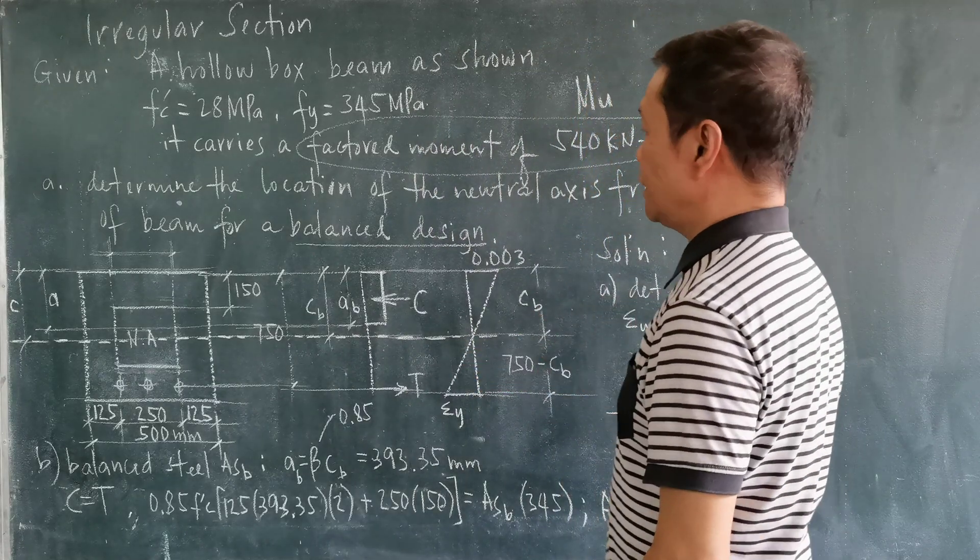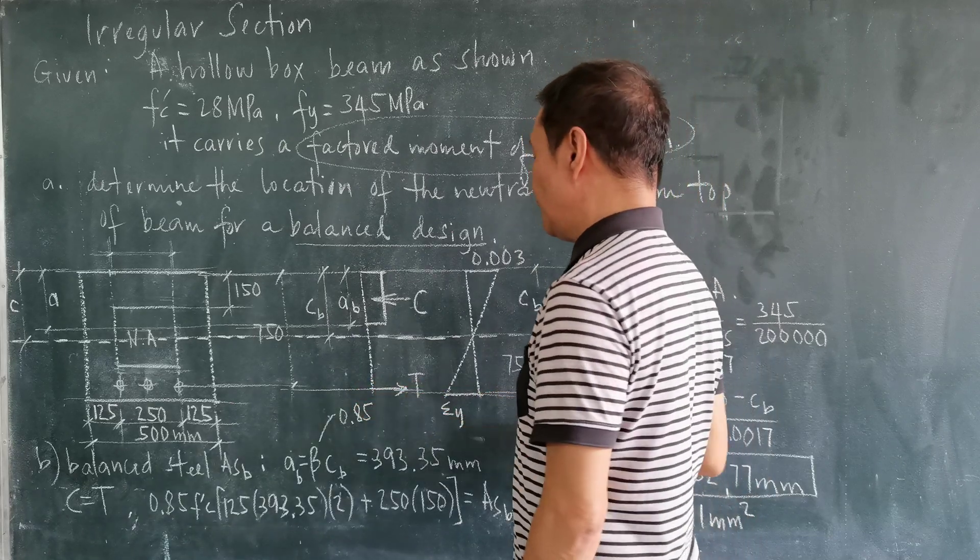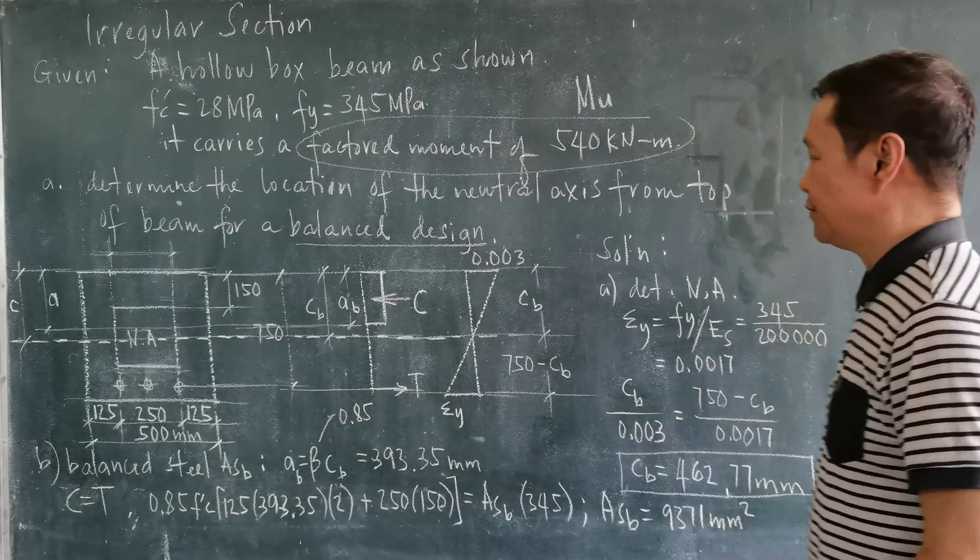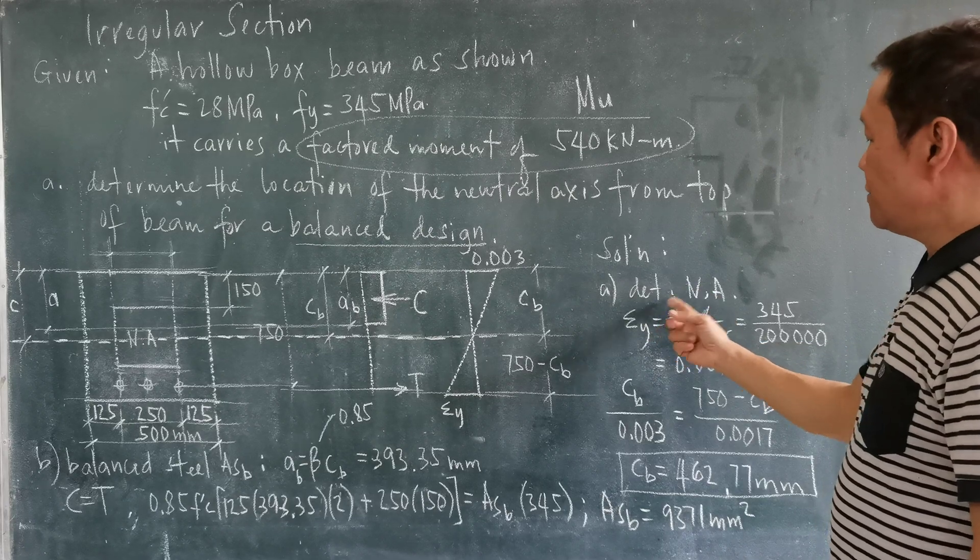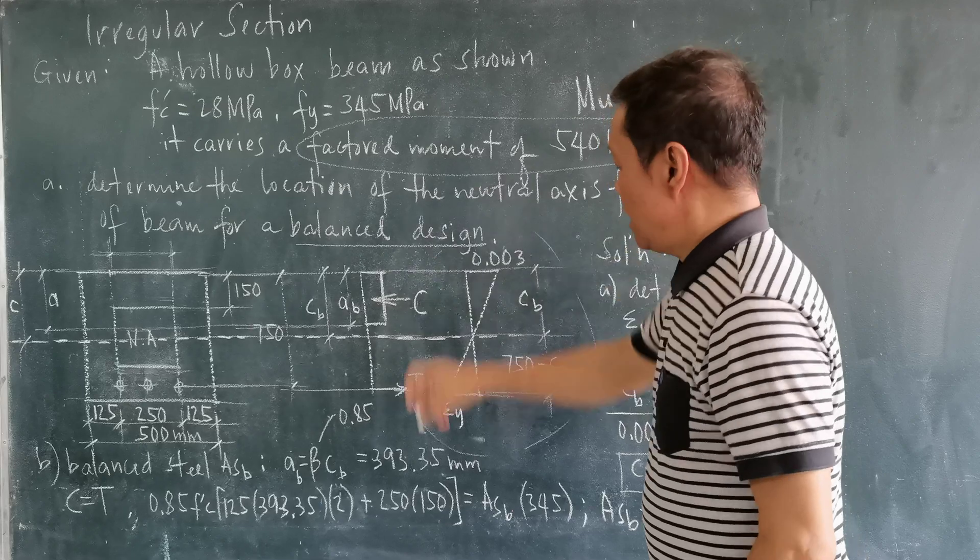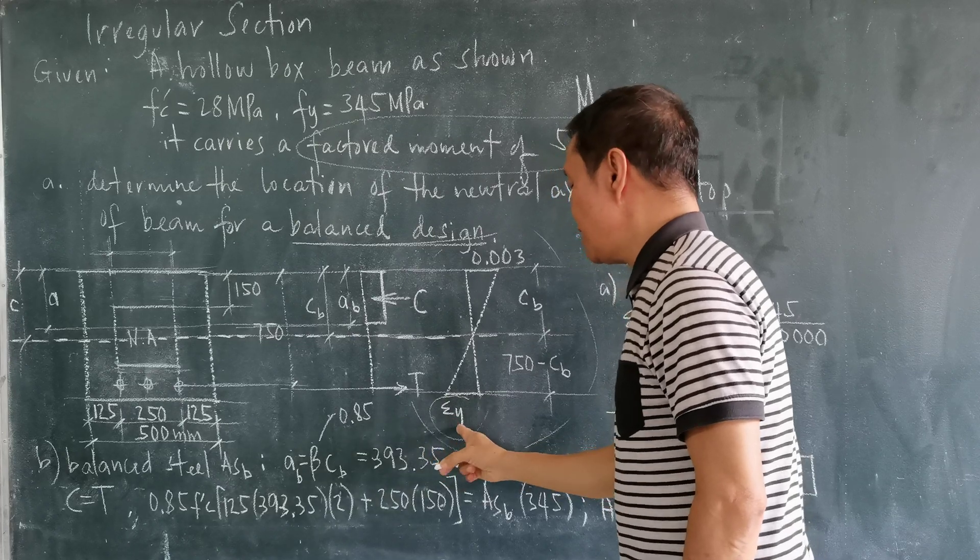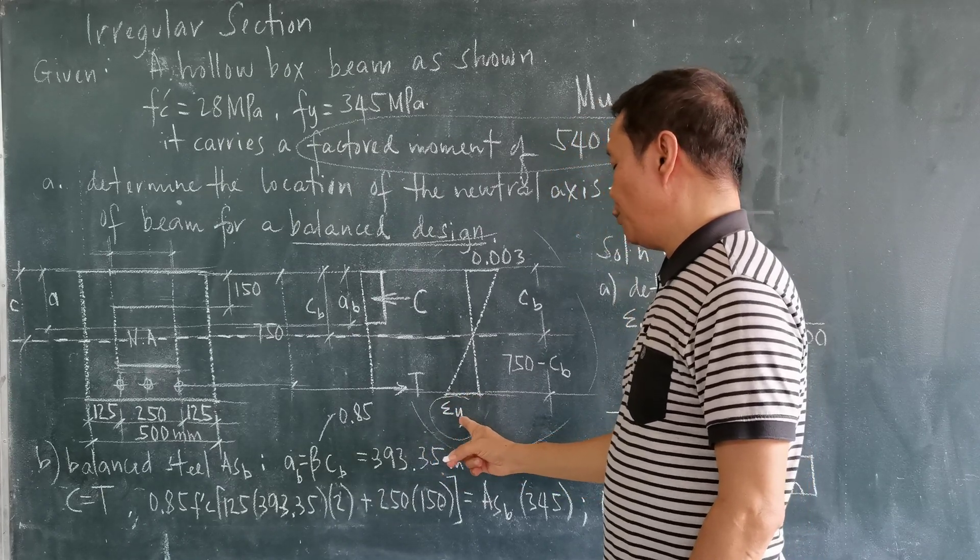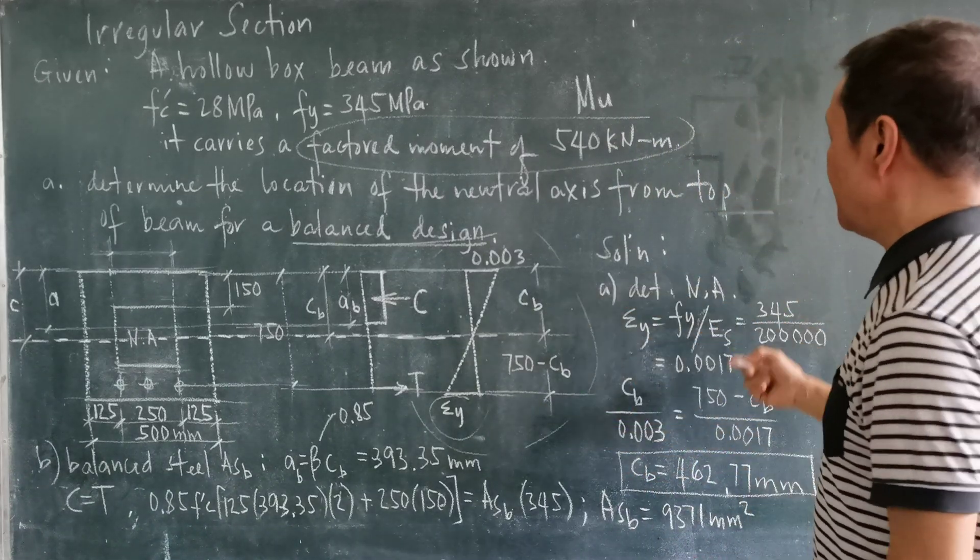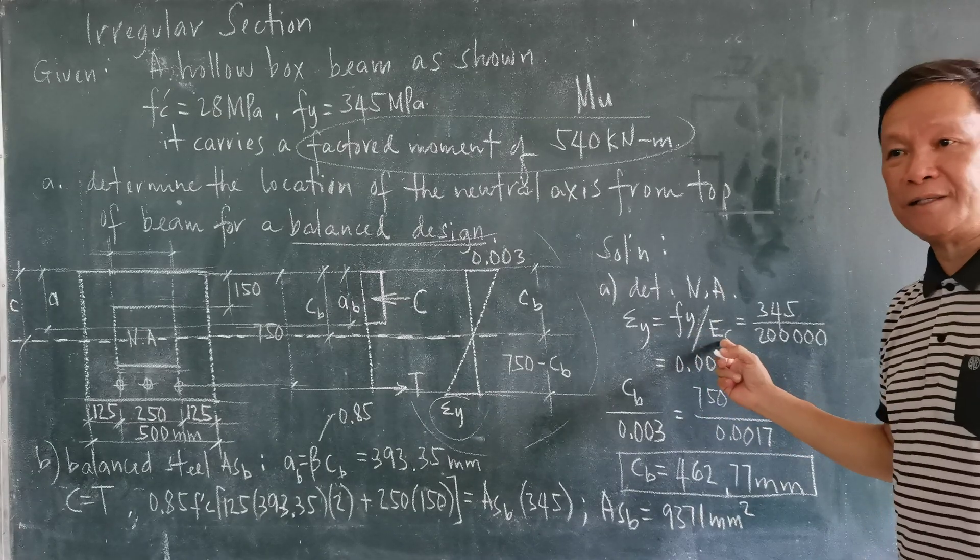The first thing that you will do to be able to determine the location of the neutral axis is to draw the stress diagram as well as the strain diagram to guide you in your solution. For a balanced design, this should already be the strain at the point of strain sub y divided by the modulus of elasticity of steel.